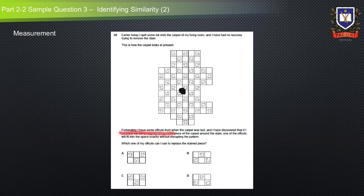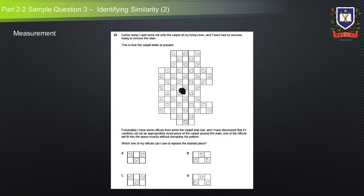Fortunately, I have some off-cuts from when the carpet was laid, and I've discovered that if I carefully cut out an appropriately sized piece of carpet around the stain, one of the off-cuts will fit into the space exactly without disrupting the pattern. This question falls in the identifying similarity category, as it requires students to identify similarities between the pattern in the diagram and the answer options.